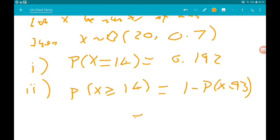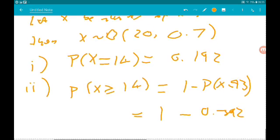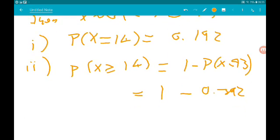So make sure you're using binomial CD. We get the probability x is less than or equal to 13, which is 0.392. So this gives us 1 minus 0.392, equals 0.608. Boom.